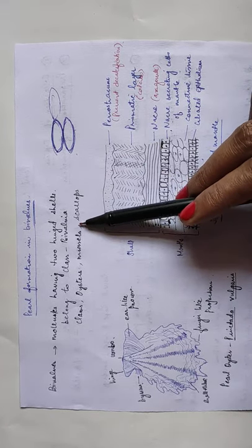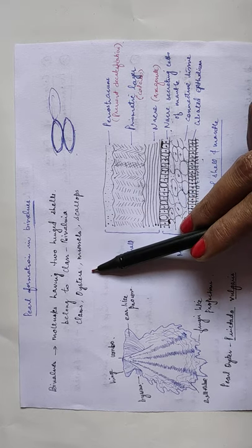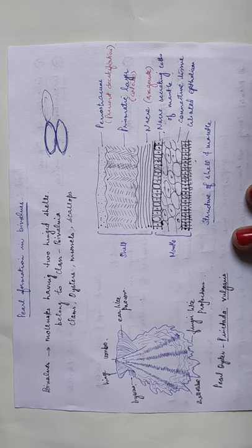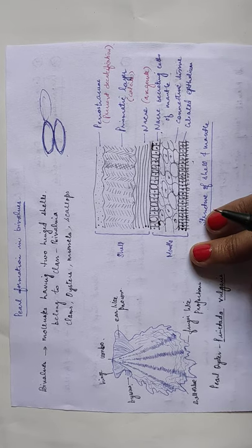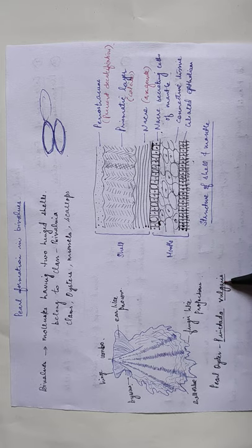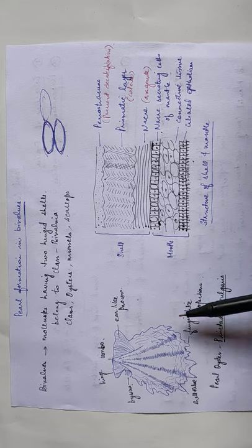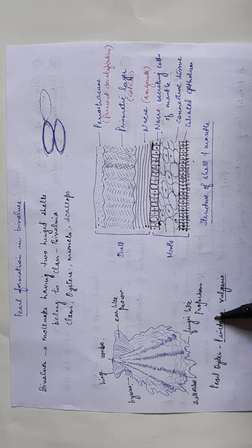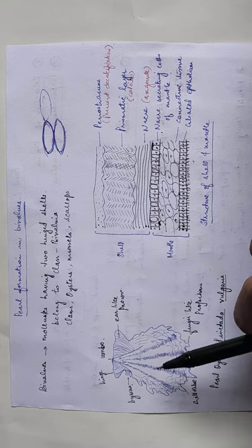They may be clams, oysters, mussels, or scallops. Now which is a pearl forming organism in India? Pinctada vulgaris forms the pearl. Though there are many species of Pinctada, but in India this is found.